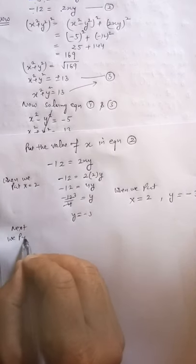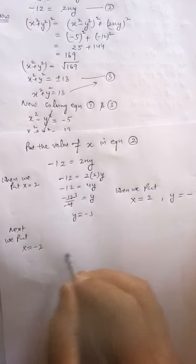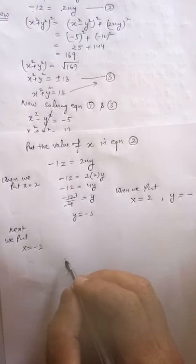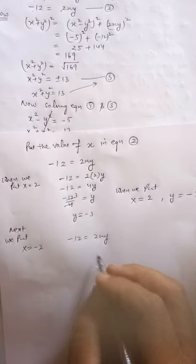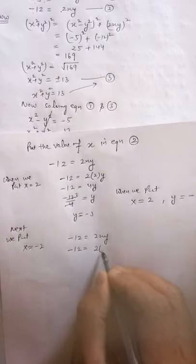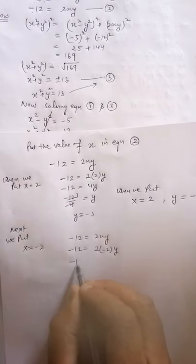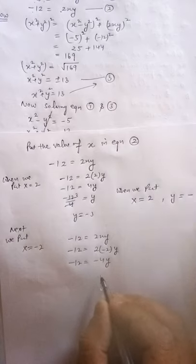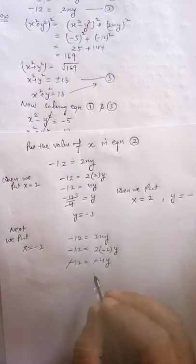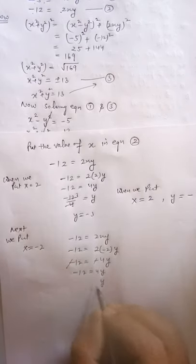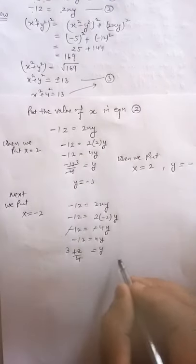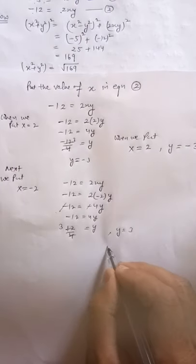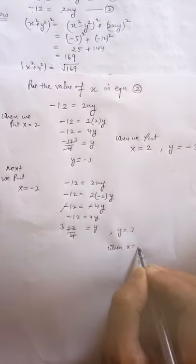Next, we put x is equal to minus 2 in the second equation: minus 12 is equal to 2xy. Putting the value of x as minus 2, we get minus 12 equals minus 4y, and y is equal to 12 by 4, which is equal to 3. So here y is equal to 3. When x is equal to minus 2, then y is equal to 3.